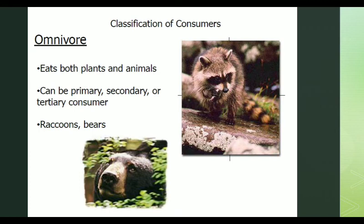Omnivores eat both plants and animals. They can be primary, secondary, or tertiary consumers.